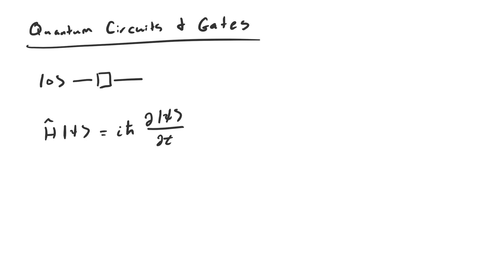We know what state our qubits are in at the beginning of the computation, and if we want to find what state they'll be in at the end of our computation, we just have to trace through what each quantum gate acting on the qubits does to them. And this is usually much easier than actually solving the Schrödinger equation.